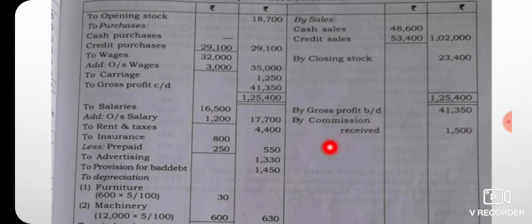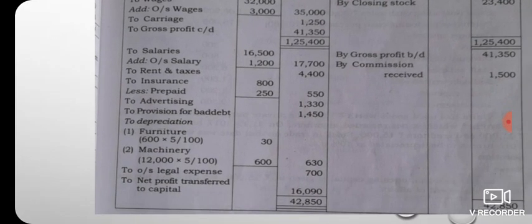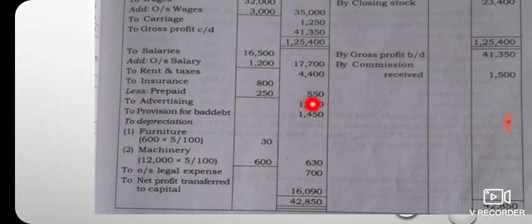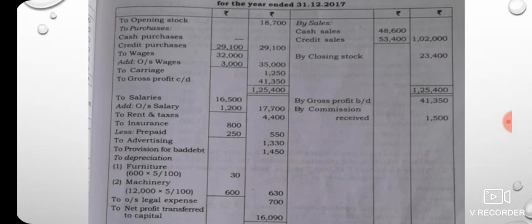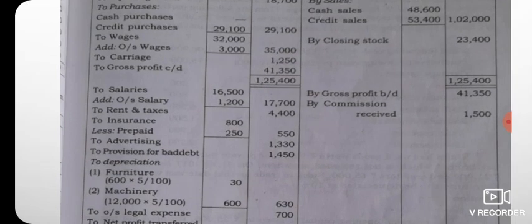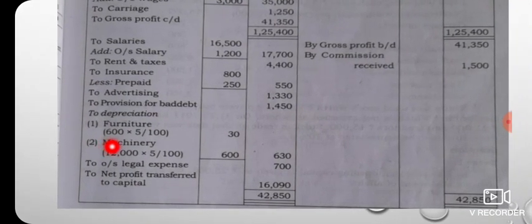Commission received is 50. On the debit side: salaries are 14,500 with outstanding salaries adjustment of 1,770. Rent and taxes are 4,500. Insurance is 1,500 with a prepaid adjustment. Advertisement expenses are 4,500. Provision for bad debts adjustment is 5,500. Depreciation on furniture is also included.